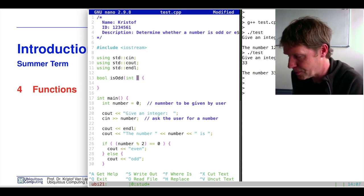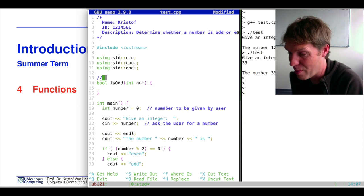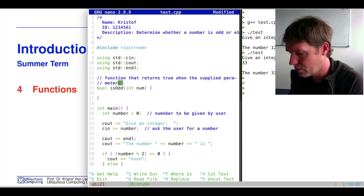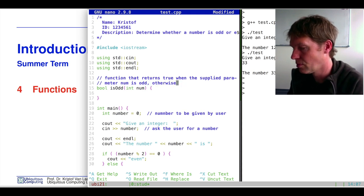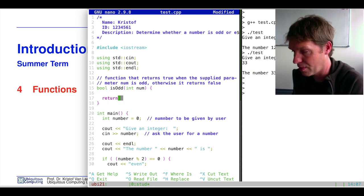Whenever we decide on a function, we have to describe what our function does. A function that returns true when the supplied parameter num is odd, otherwise it returns false. So that later we can see exactly what the deal was.